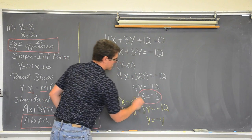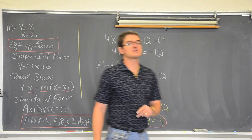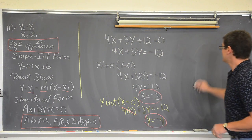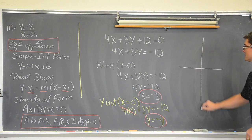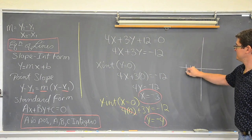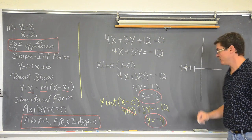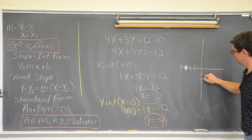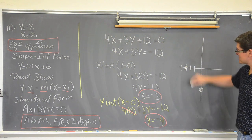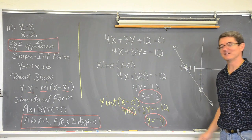That is four times zero plus 3y equals negative twelve. Four times zero is zero, so 3y equals negative twelve. When you divide both sides by three, y equals negative four. So now I have two points — an x-intercept and a y-intercept. If I have two points I can graph a line. We have an x-intercept of negative three and a y-intercept of negative four, and through those points we have a line.